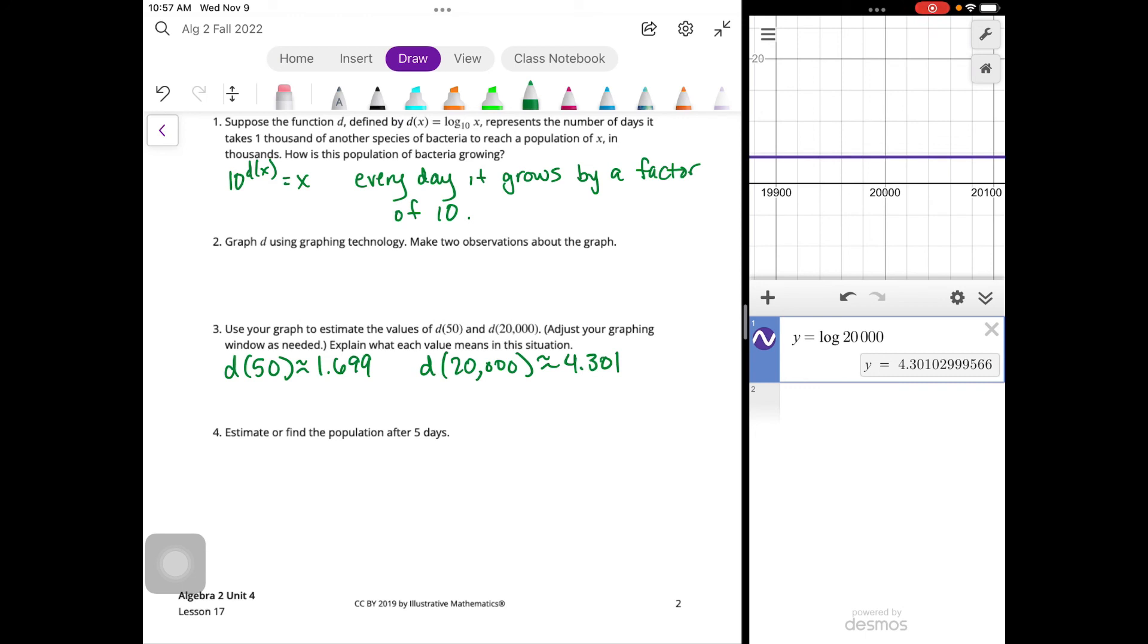All right. So estimate or find the population after five days. So after five days, remember that d of x is five. So d of x is equal to five. So five equals log base 10 of x. Right. So that means that 10 to the fifth equals x. So x is 10. I'm sorry. One with five zeros. So it's 100,000. Oh, wait. No, because it was represented that it was in a thousand. So that's 100,000,000. So that is 100 million. Right. So that would be the population after five days.